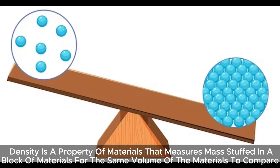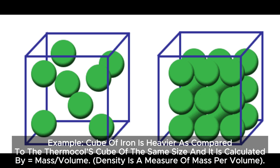Density is a property of materials. It measures the mass stuffed in a block of material for the same volume, to compare materials. For example, a cube of iron is heavier compared to a thermocol cube of the same size. Density is calculated as mass divided by volume.